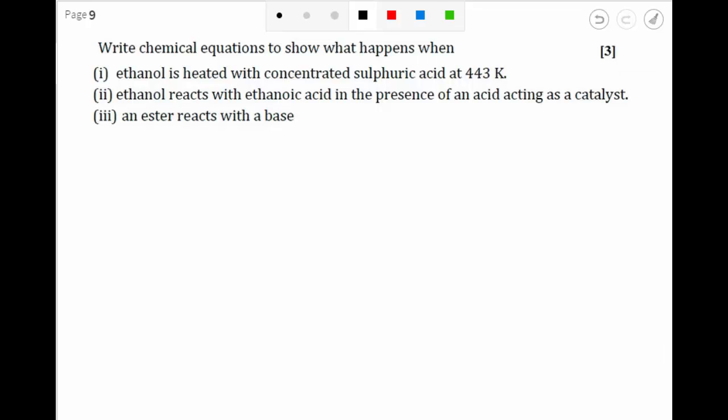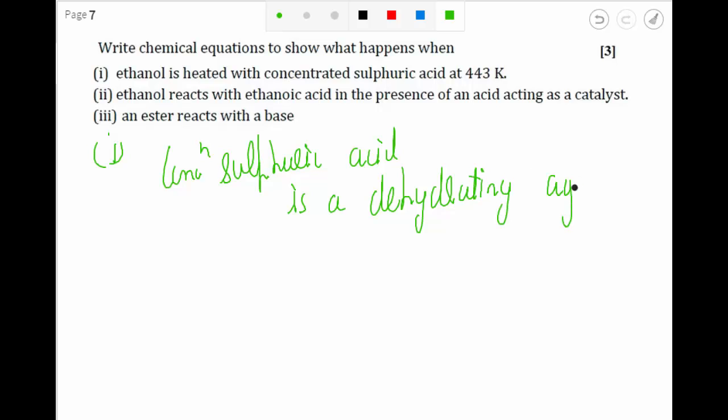Let us try to understand this question. In the first part, ethanol is heated in the presence of concentrated sulfuric acid. Always remember, concentrated sulfuric acid is a dehydrating agent. A dehydrating agent means it dehydrates the reactant - it takes out the water out of the reactant. So here, my reactant is ethanol.